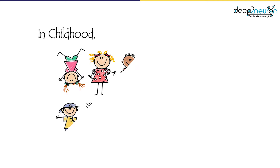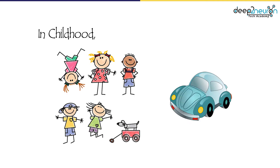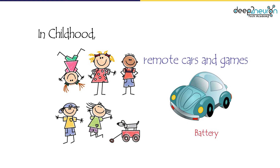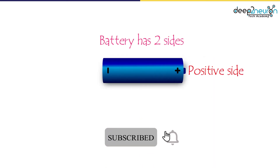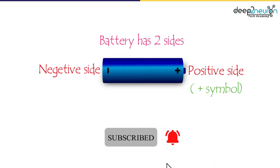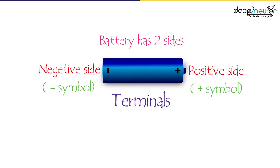In childhood, we have play using remote cars and games. While playing those games, we may notice one thing — the battery, which is located at the bottom of the car. Sometimes we would like to know more about that battery. A battery has two sides: the positive side and the negative side. Those sides are called terminals.